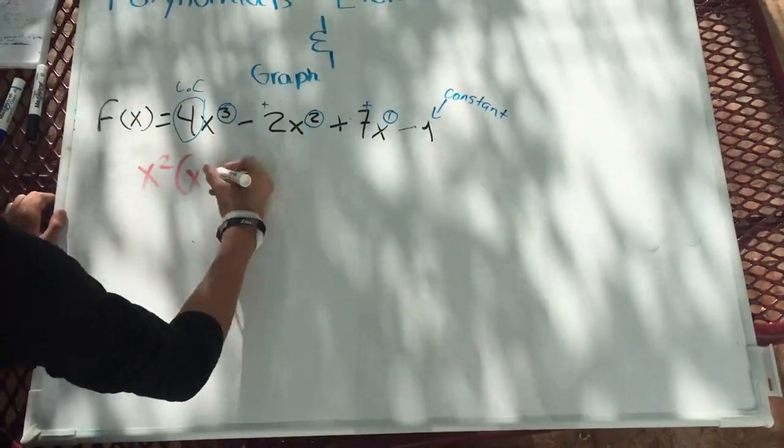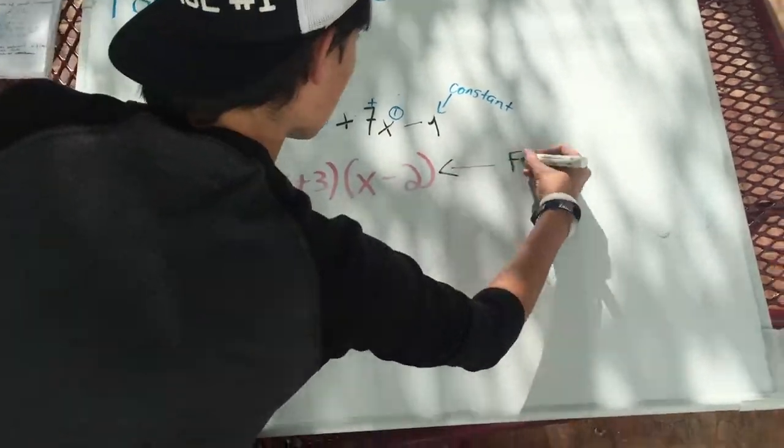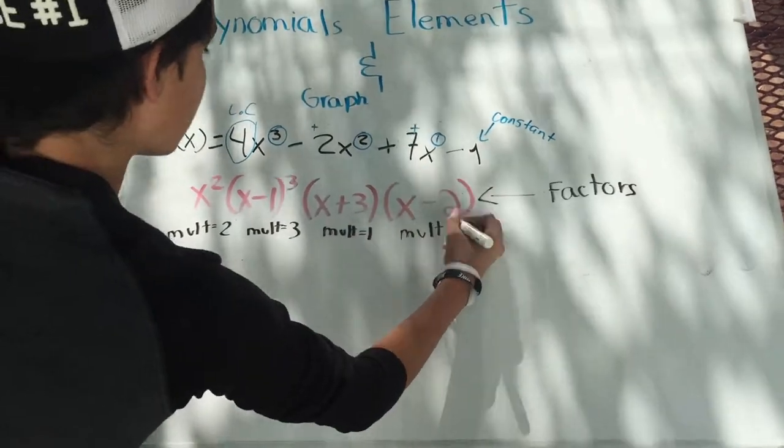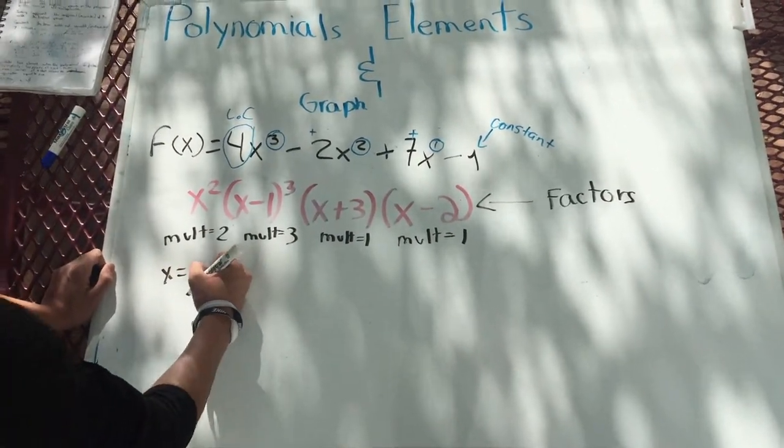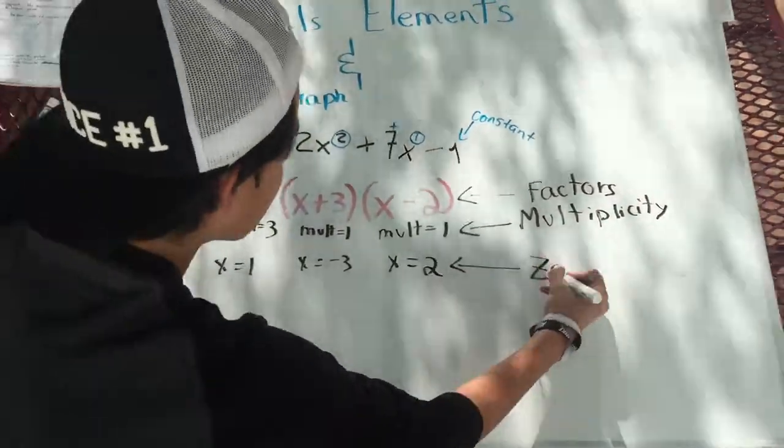De-factors are the terms of the factorized polynomial, and the multiplicity is the degree of each factor. The solutions of each factor are called zeros, and those zeros will help us to graph.